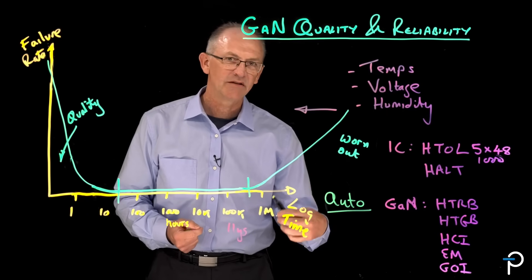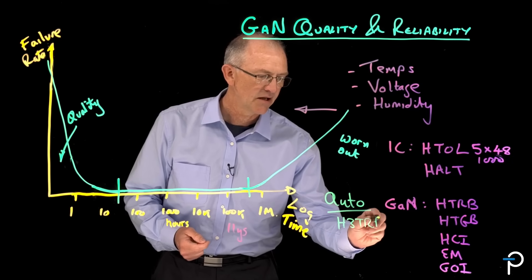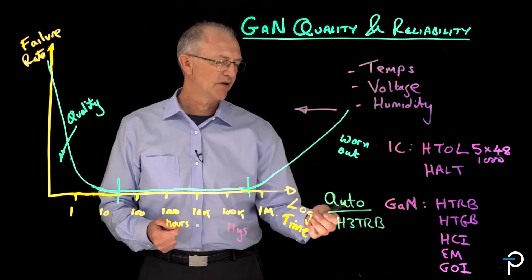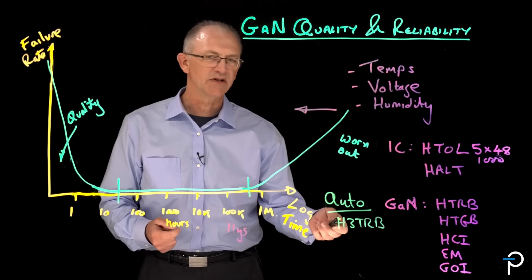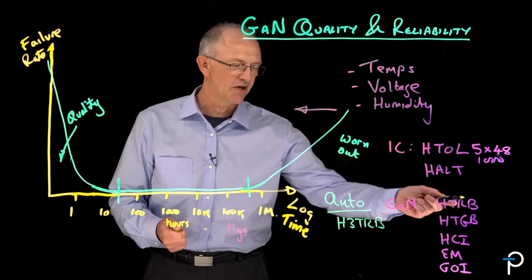And what we run primarily for automotive is H3TRB. And this is a test that further increases the humidity and temperature over the standard H3TRB.